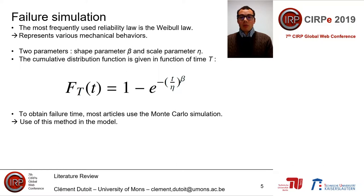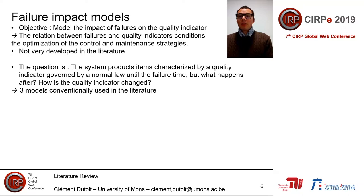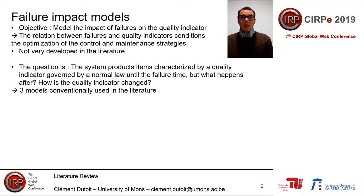For the failure impact model, we have to model the impact of the failure on the quality indicator. This relation between failure and quality indicator is very important for the optimization of the control strategy, because the optimal control chart will not be the same depending on it — and this topic is not very developed in the literature. The question is: we have a production system that produces items characterized by a normal law, and then we have a failure — but what happens after the failure? How does the quality indicator change? There are three different models conventionally used in the literature.